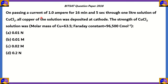On passing a current of 1A for 16 minutes and 5 seconds through 1 liter of solution of CuCl₂, all copper of the solution was deposited at the cathode. The strength of the CuCl₂ solution was — here the molar mass of Cu is given as 63.5, and the Faraday constant is 96,500 coulombs per mole.